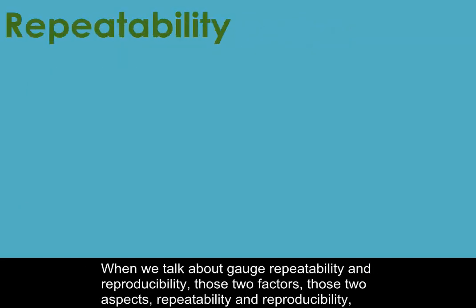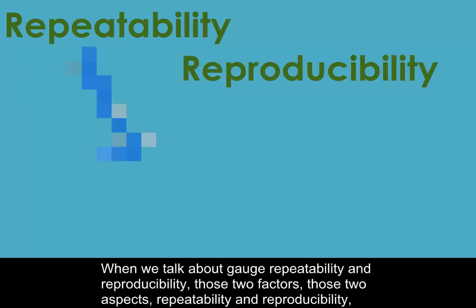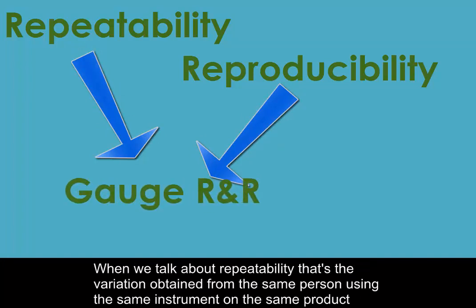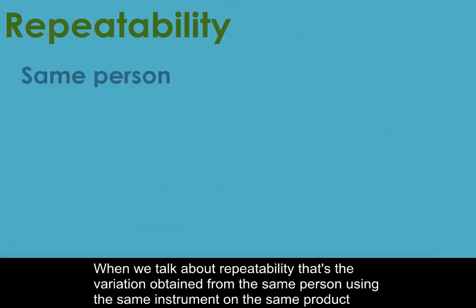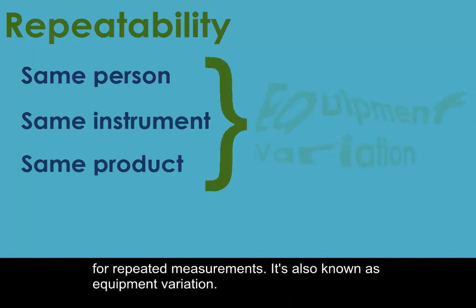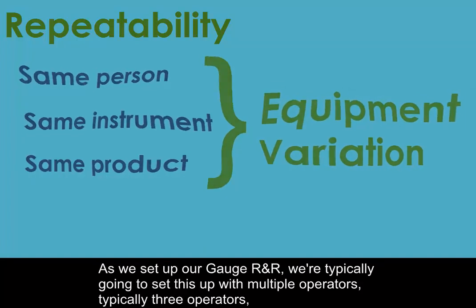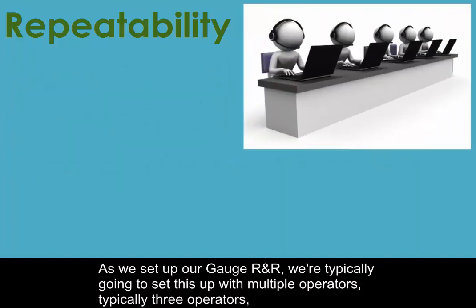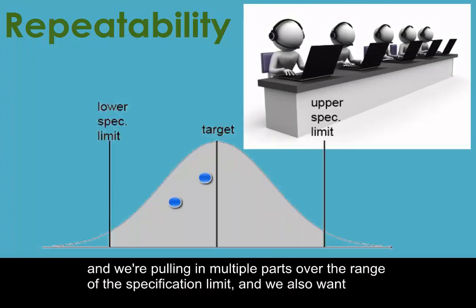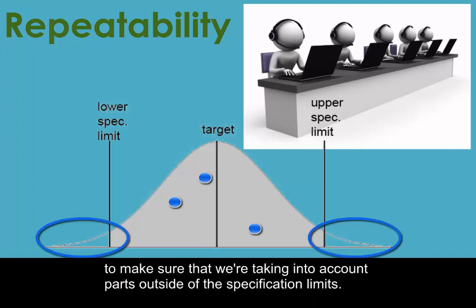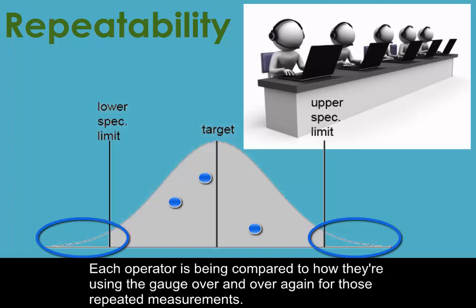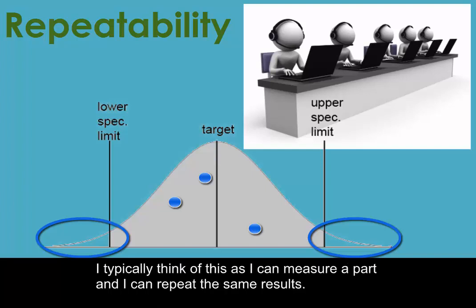When we talk about gauge repeatability and reproducibility, those two aspects — repeatability and reproducibility — are how we set up our gauge R&R. Repeatability is the variation obtained from the same person using the same instrument on the same product for repeated measurements. It's also known as equipment variation. As we set up our gauge R&R, we're typically going to use multiple operators — typically three — and we're pulling in multiple parts over the range of the specification limits, including parts outside of specification limits. Each operator is compared in how they use the gauge over and over with repeated measurements — I can measure a part and repeat the same results.